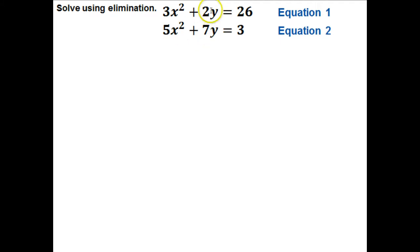You can get rid of the y's. You can multiply the top one by 7 and the bottom one by negative 2. That would work. For this particular one, I'm going to do my x's. I'm going to eliminate those first, but again, you could choose the other method if you wanted to.